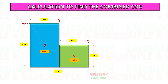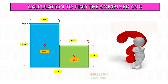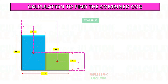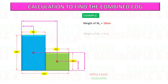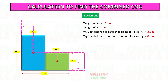In this video you will learn how to calculate the combined COG location of an object. Example: based on the below given values, calculate the combined center of gravity of an object. Weight of object 1 is 10 ton, weight of object 2 is 4 ton.